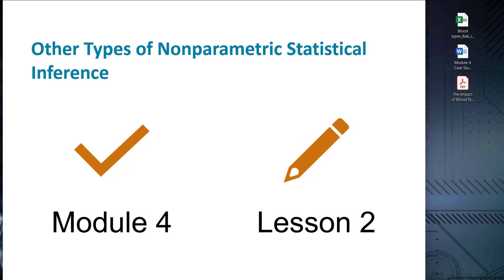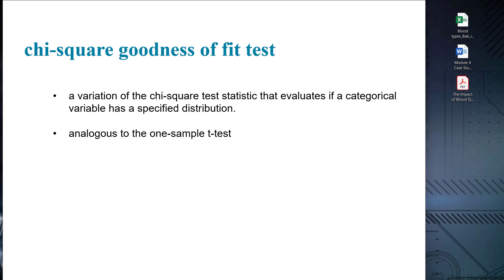First, let's look at the goodness of fit test, a fundamental non-parametric technique that is an extension of the chi-square test where we have only one category to analyze. Traditionally associated with categorical data analysis, this test allows us to assess whether observed data fits a specific theoretical distribution or expected proportions. The goodness of fit test goes beyond traditional hypothesis testing by employing ranks or counts rather than relying on precise numerical values.